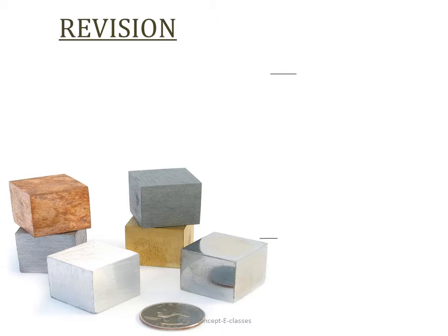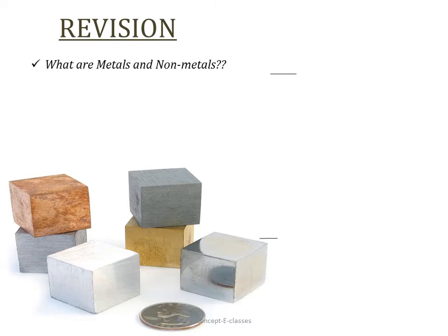First, we saw what are metals and non-metals. Metals are those elements such as aluminium, iron, and copper which are hard, solid to touch, lustrous, malleable, ductile, sonorous, and good conductors of heat and electricity. Non-metals are those elements which do not exhibit any of these metallic characteristics — they are soft, dull, brittle, not malleable, not ductile, not sonorous.